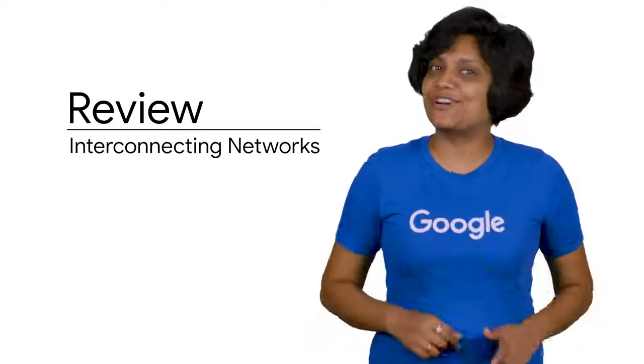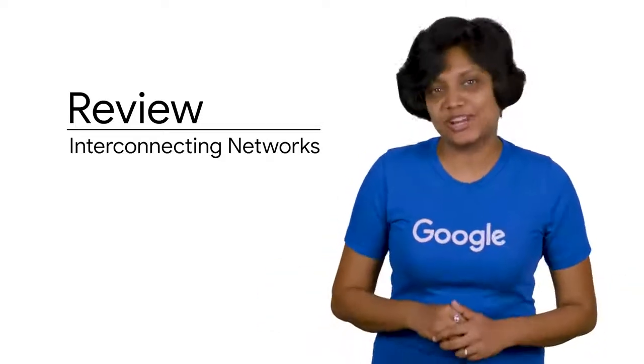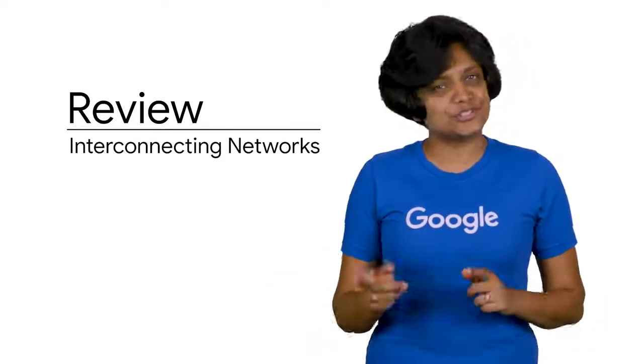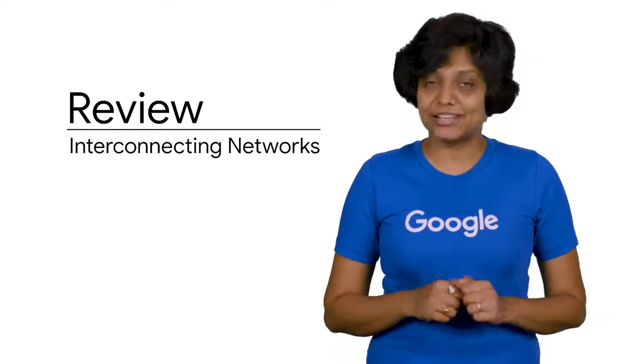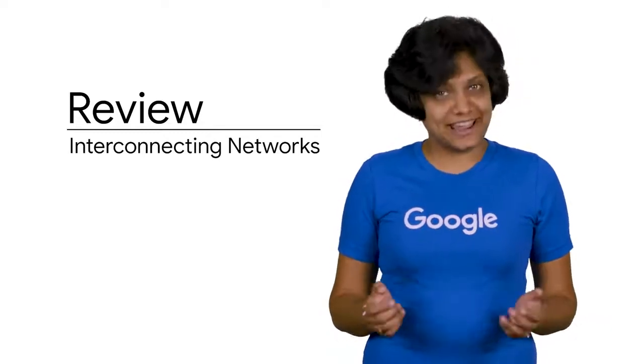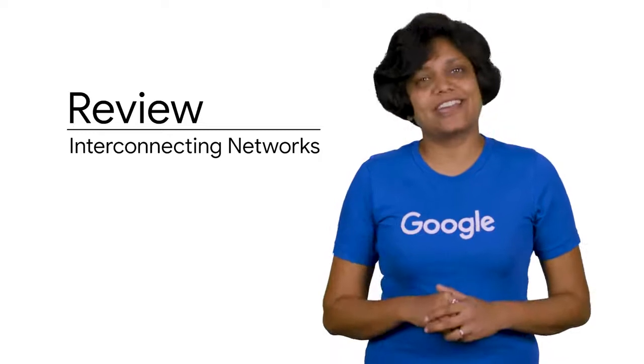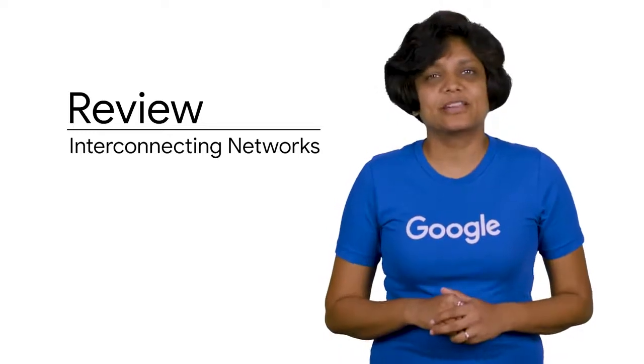In this module, we looked at five different ways of connecting your infrastructure to GCP, which are Dedicated Interconnect, Partner Interconnect, Cloud VPN, Direct Peering, and Carrier Peering.